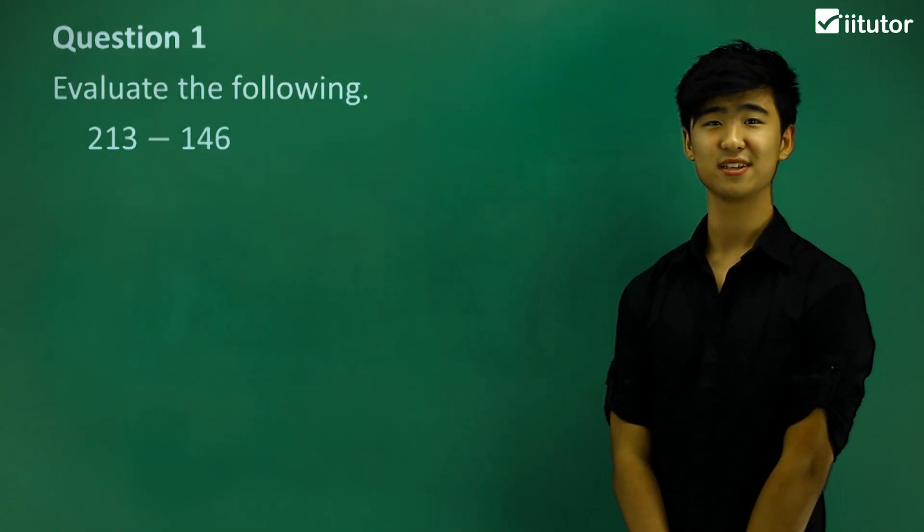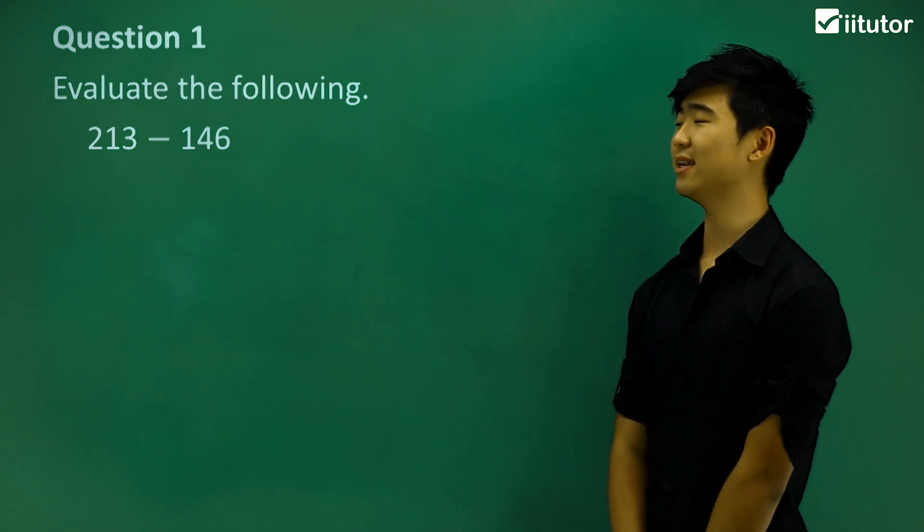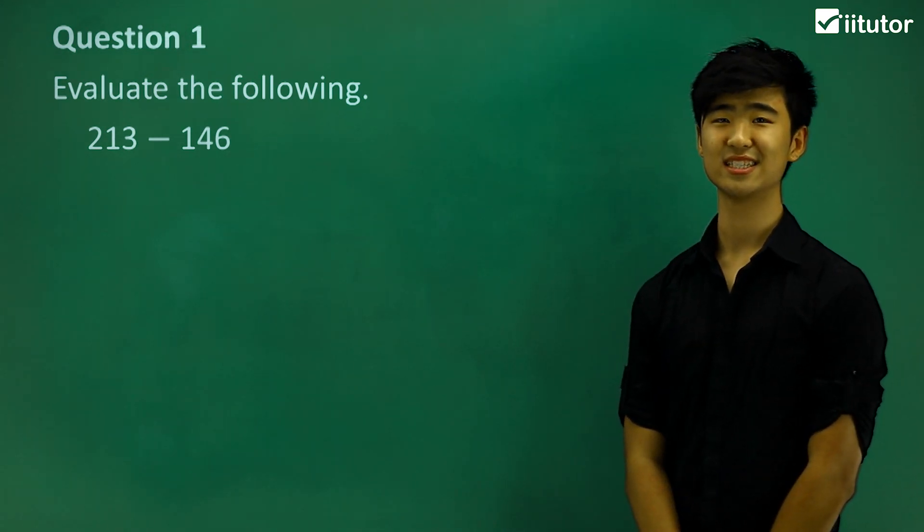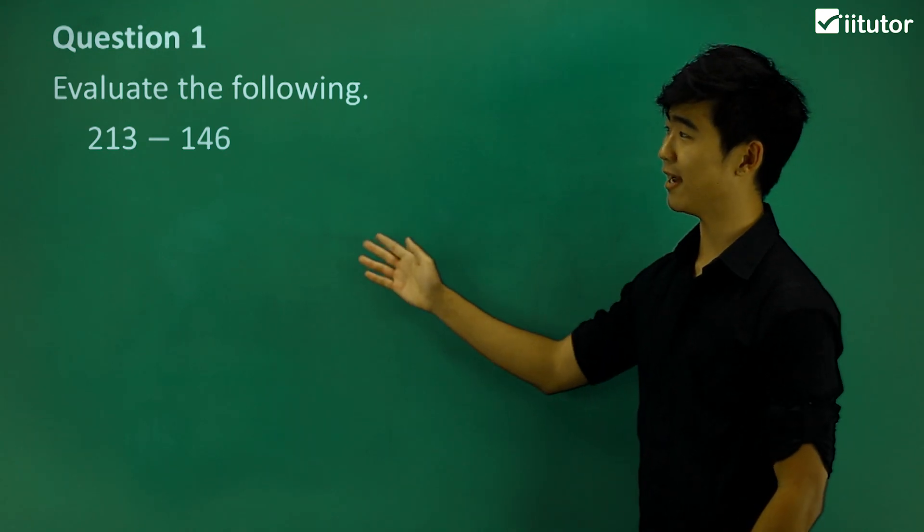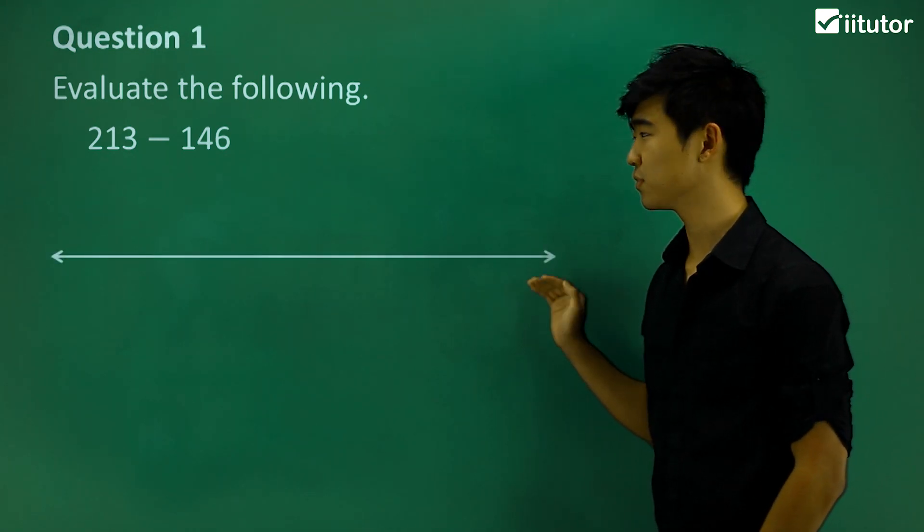Question number one says evaluate the following: 213 minus 146. One way we can answer this question is by writing it out on a number line. So here's my number line.